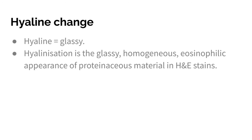The second type is hyaline change. 'Hyaline' means something which appears glassy. In this type, there is deposition of protein. Hyalinization is the glassy, homogenous, eosinophilic appearance of proteinaceous material in H&E (hematoxylin and eosin) stain.